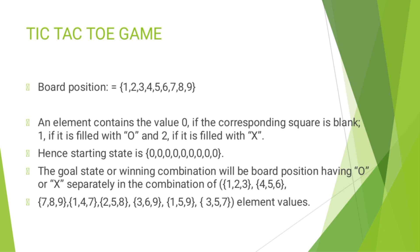The starting state of the Tic-Tac-Toe game is all zeros: 0, 0, 0, 0, 0, 0, 0, 0, 0. The goal state is a winning combination where the board positions have O or X separately. The winning combinations are: 1,2,3 or 4,5,6 or 7,8,9 (horizontal), then 1,4,7 or 2,5,8 or 3,6,9 (vertical), and 1,5,9 or 3,5,7 (diagonal).